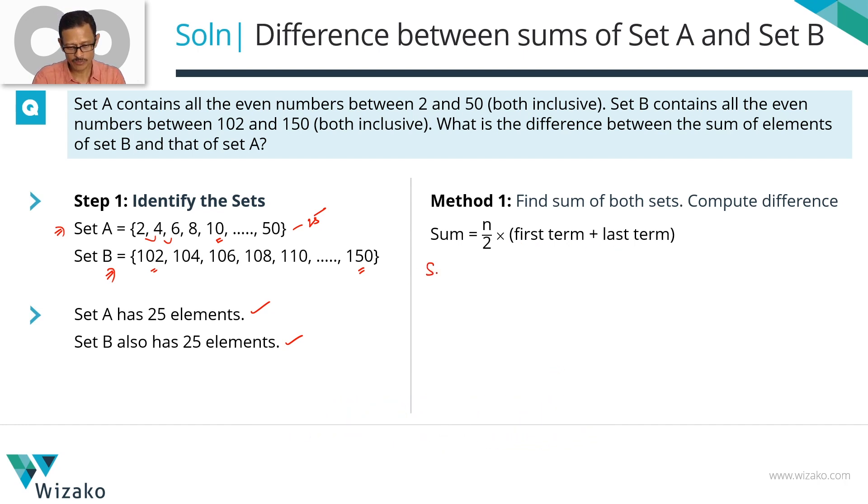So let's find out sum for set B. We'll call it as sum of B. How many elements are there? There are 25. So 25 by 2. The first element of set B is 102. The last element of set B is 150. 150 plus 102 is 252 divided by 2 is 126. So this is 25 times 126. 25 into 120, 25 times 120 is 3000 plus 150. So this number is 3150. So you compute the sum of elements of set B.